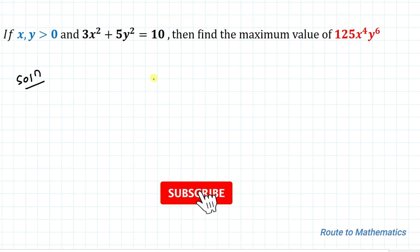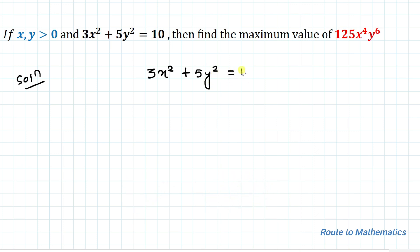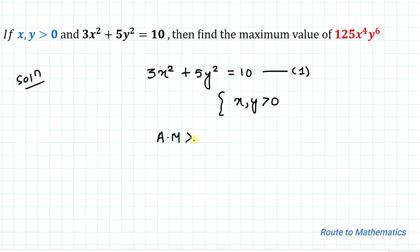We have given 3x² + 5y² = 10 — let's take it as equation 1. We are also given x, y > 0, which means both x and y are positive values. We are asked to find the maximum value of 125x⁴y⁶. Since x and y are positive, we can apply the AM-GM inequality.